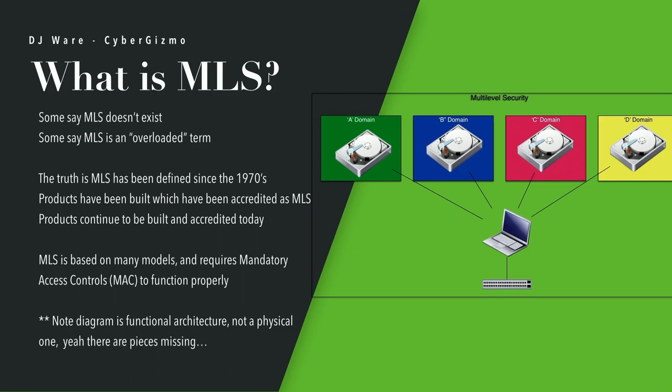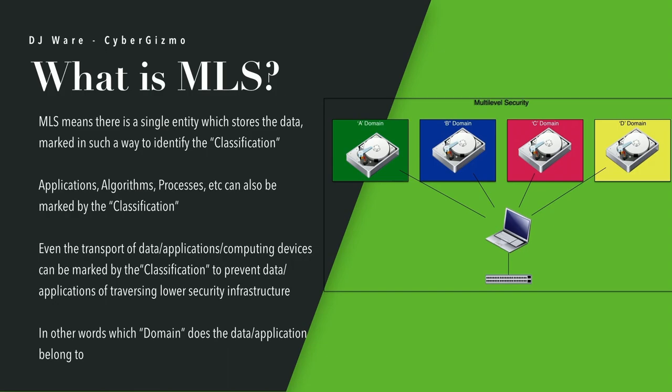If I'm a security level A domain user, I can't see the other three. If I'm a C level security domain user, I can see A, B, and C, but not D. MLS means there's a single entity which stores data marked in such a way as to identify its classification — in other words, that data has some kind of label associated with it that identifies that particular piece of data. It could even be a record in a database.